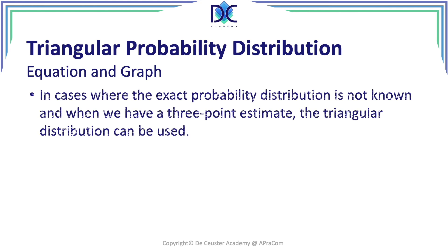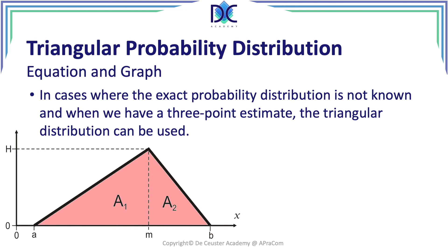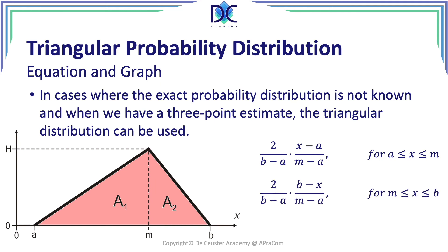Looking at the equation and graphs for the triangular distribution: we have a minimum value a, a maximum value b, and the mode m. The height of the triangle is h. For x between a and the mode, the probability density is: 2 divided by (b minus a) times (x minus a) divided by (m minus a). Outside values of x smaller than a or larger than b, the value of the triangular distribution is zero.